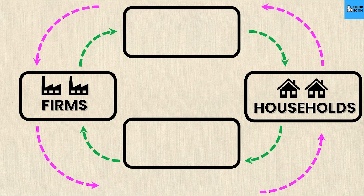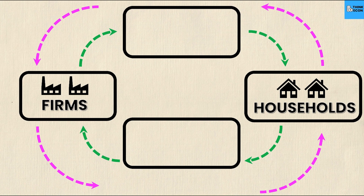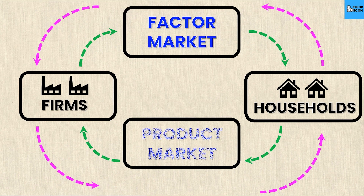Firms are producers of goods and services and households are the suppliers of the factors of production. That leads to two markets: the factor market, which is also known as the resource market, which includes the four factors of production — entrepreneurship, land, labor, and capital — and then the product market, which is the products and services provided by firms.